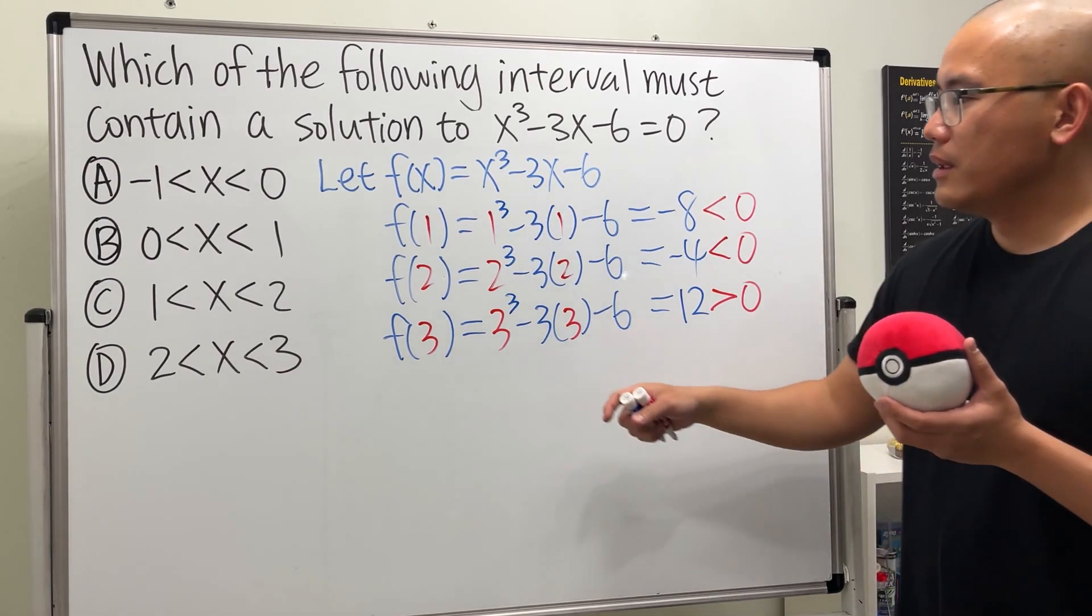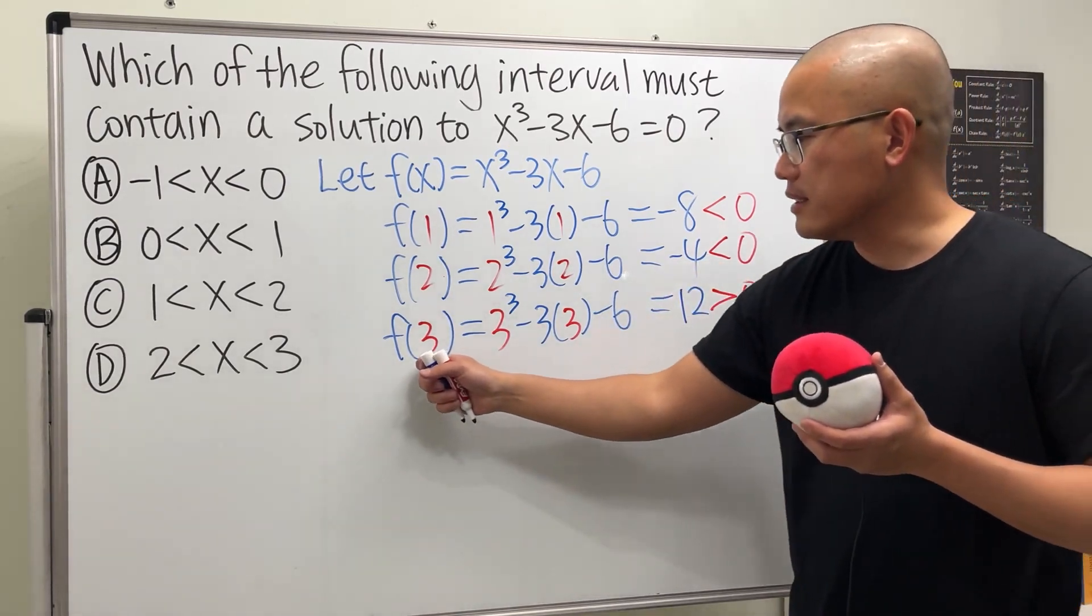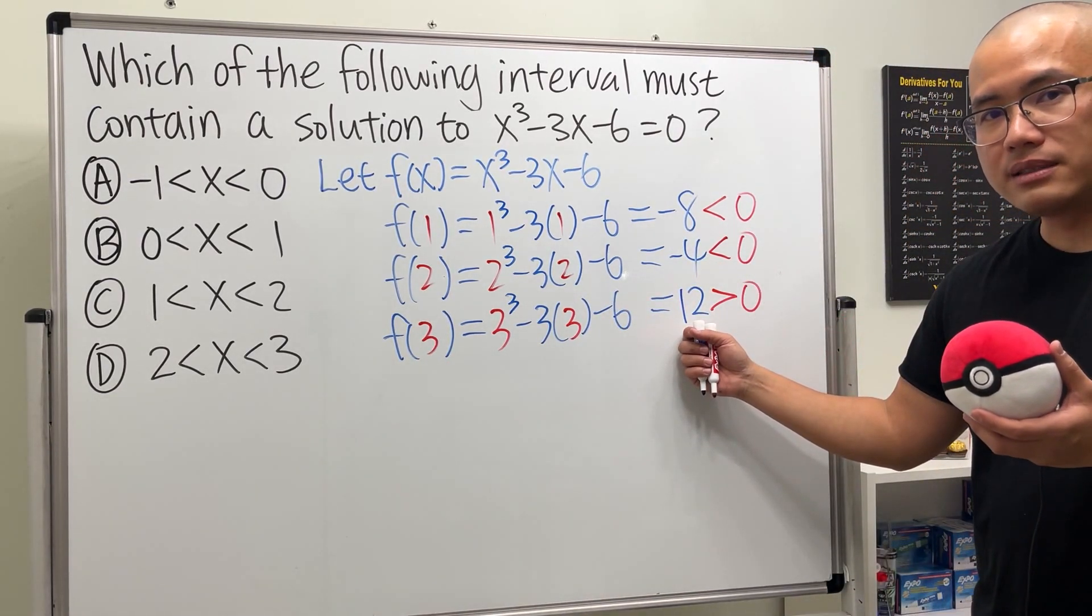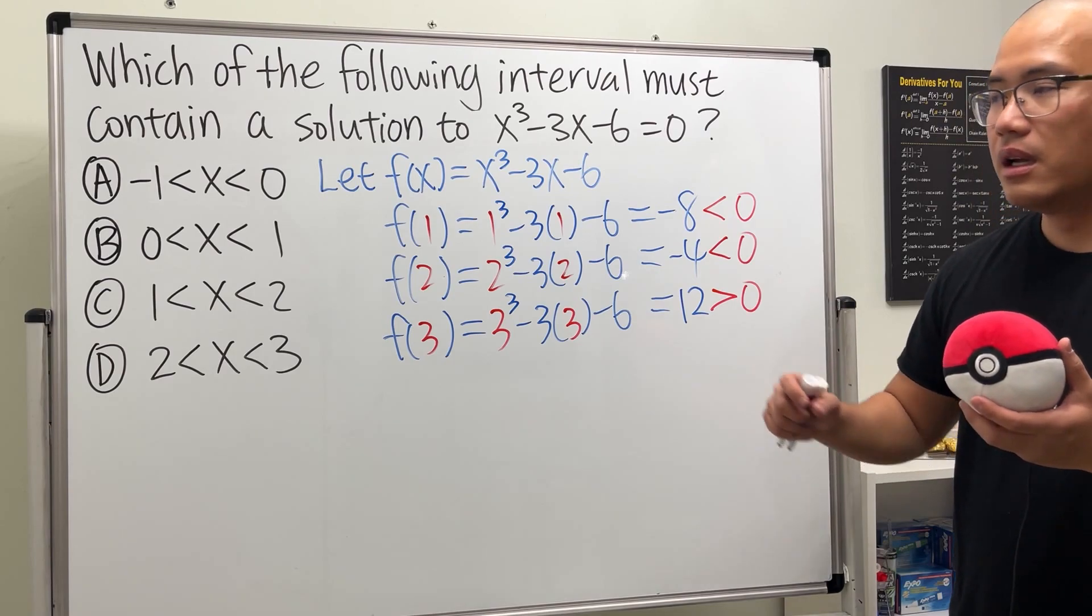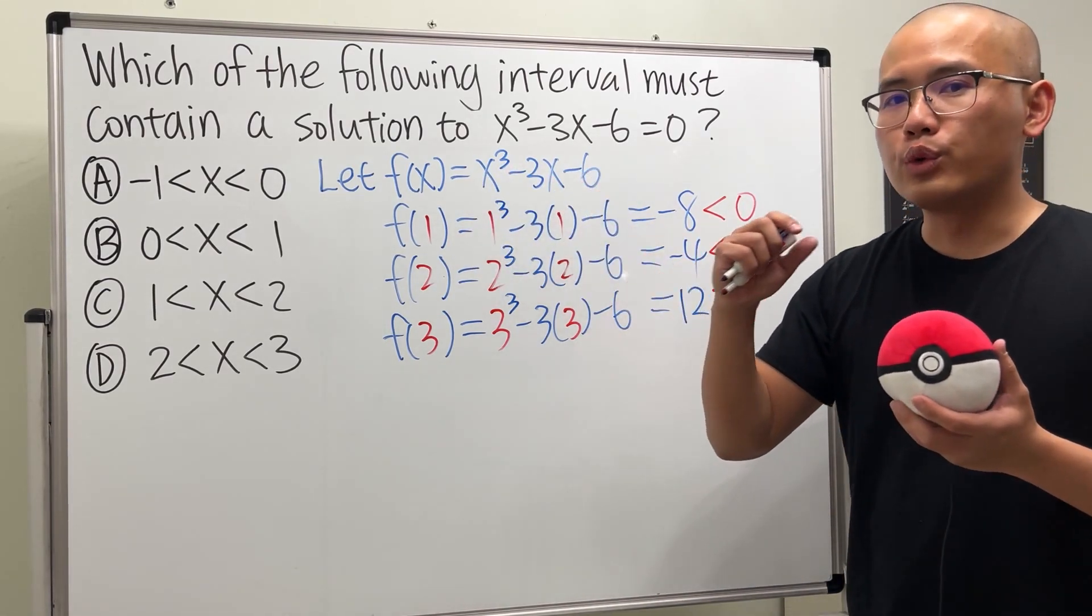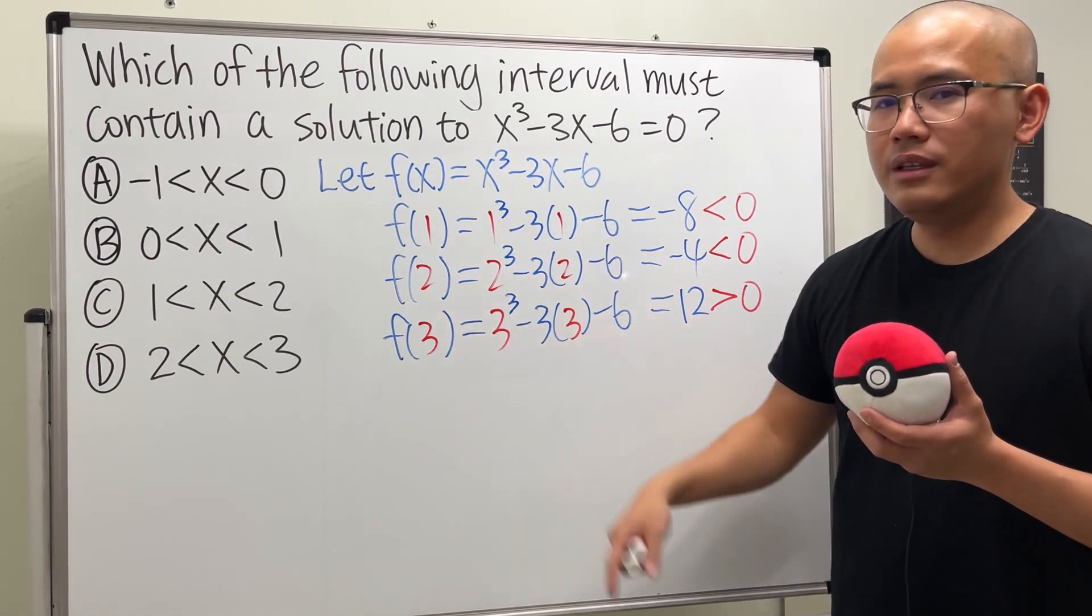So as you can see, when x is 2, we have negative. When x is 3, we have positive. So that means the function must be equal to 0 somewhere in the middle, right?